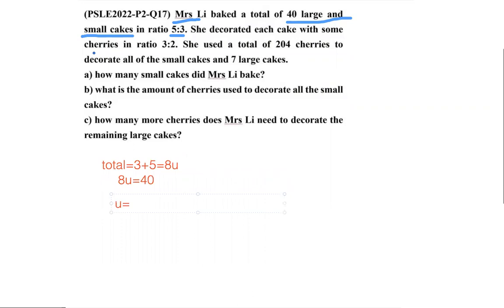Now we can answer the first question. If 8 units equals 40, then 1 unit will be 40÷8=5.